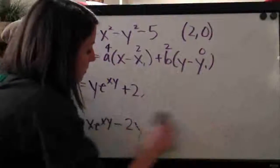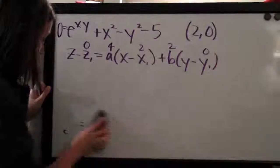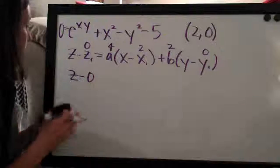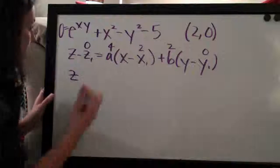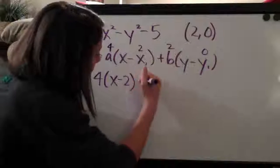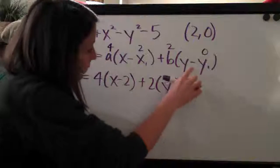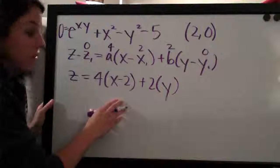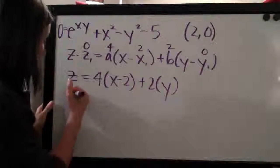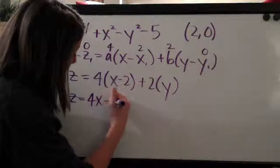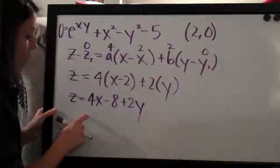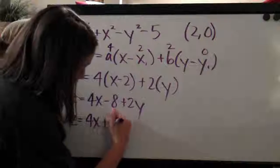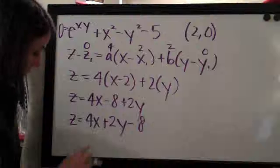Now that we've solved for all components, we simplify the linear approximation equation. We have z minus 0 equals 4·(x minus 2) plus 2·y, which simplifies to z equals 4x minus 8 plus 2y. Keeping variables in alphabetical order with constants at the end, the cleanest answer is z equals 4x plus 2y minus 8.